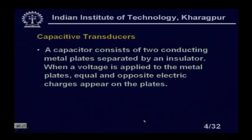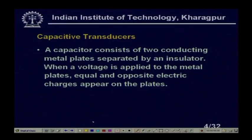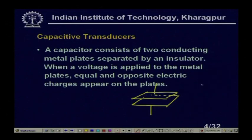A capacitor consists of two conducting metal plates separated by an insulator or dielectric medium. These metal plates can be either rectangular plates or cylinders. It can be two parallel plates with a dielectric in between, or it can be cylindrical plates as well.